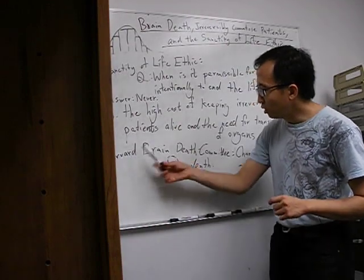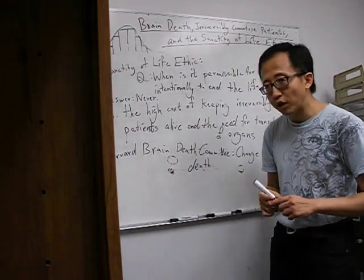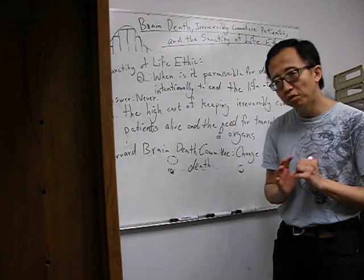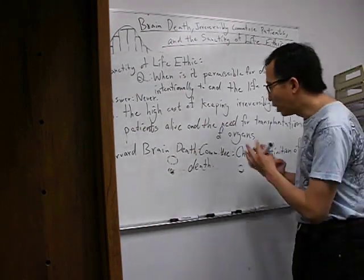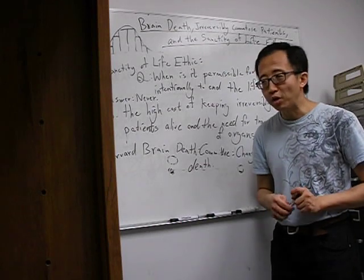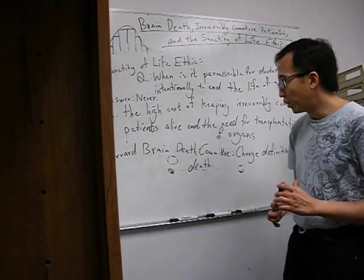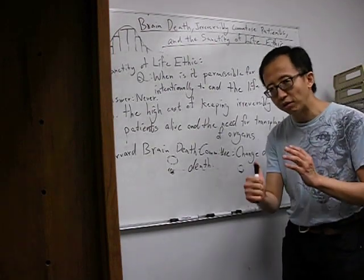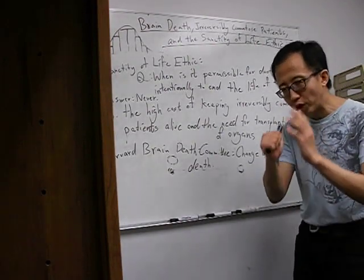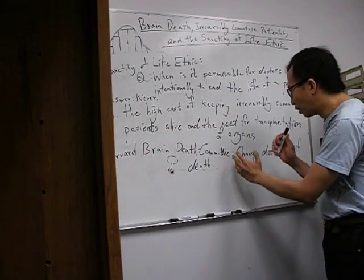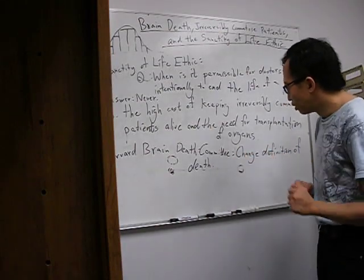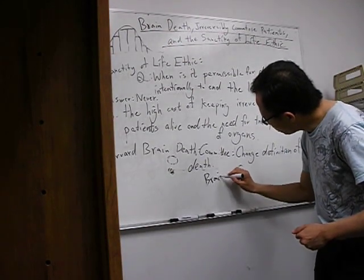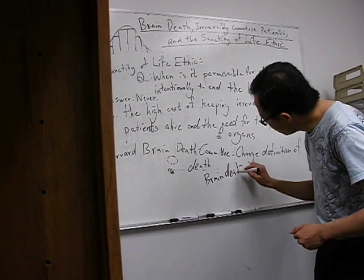Well, the Harvard Brain Death Committee in 1968 decided to come up with an interesting way of solving the problem. And they proposed to solve the problem by redefining death, by redefining what it means to be dead. So the Harvard Brain Death Committee in 1968 changed the definition of death from the traditional definition of death to the notion of brain death.